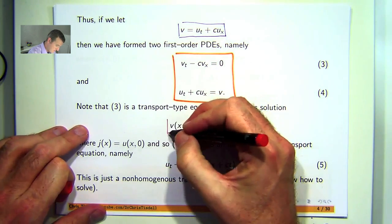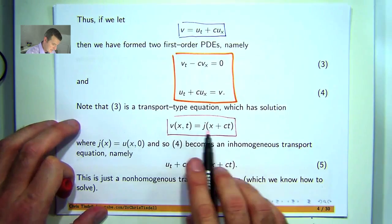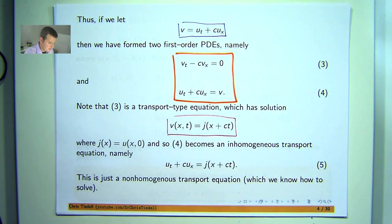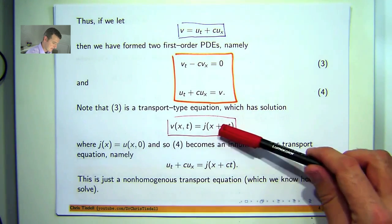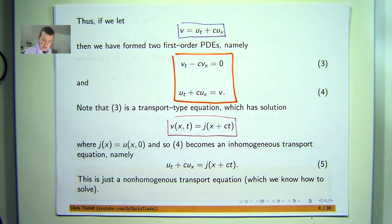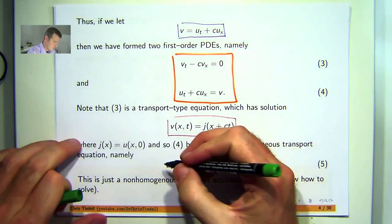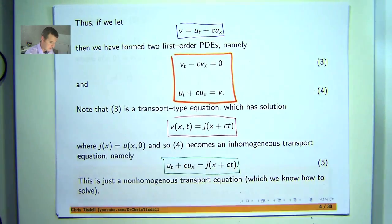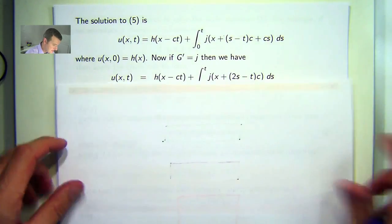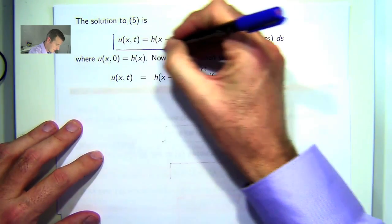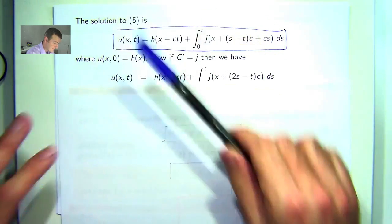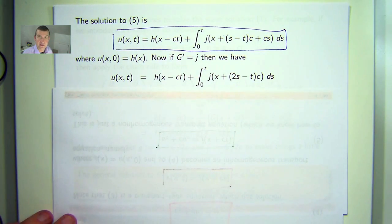C is a constant, remember. Here's a homogeneous transport type equation and here's an inhomogeneous transport type equation. So you solve this one first, get an answer for V and then you plug it in there and you solve that. We know that the solution to 3 is this, where J is an arbitrary but differentiable function such that this holds. So you take that, plug it in there and now you have an inhomogeneous transport equation which you can solve for your U. You can solve this a number of different ways. In previous videos, we've looked at the method of characteristics and you can apply the method of characteristics to that problem pretty easily.